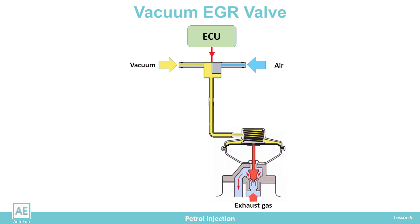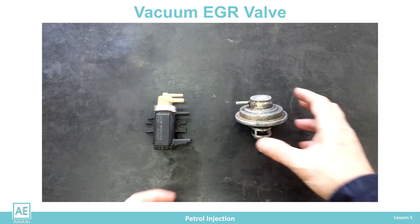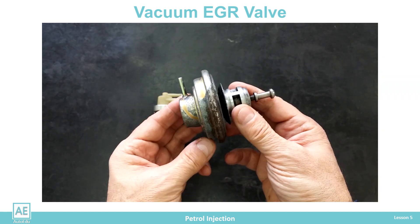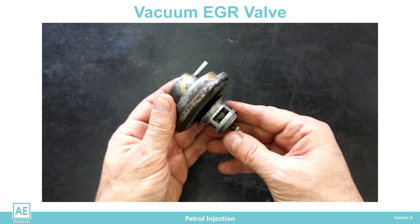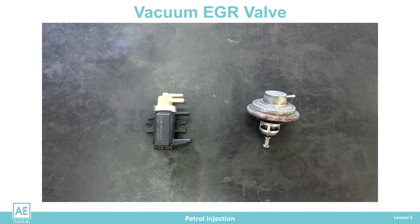When a vacuum is supplied from the solenoid valve, the EGR valve is open and we have exhaust gas recirculation. When outside air is supplied, the EGR valve is closed and there is no exhaust gas flow into the engine intake manifold. The disadvantage of the vacuum EGR valve is that it has only two states — open and closed — with no possibility of regulating the exhaust gas flow between these two states.